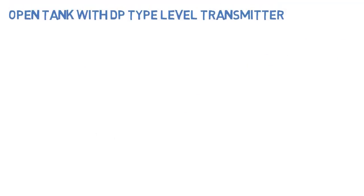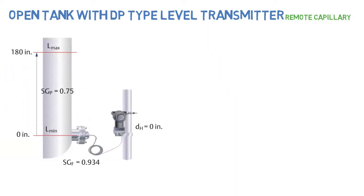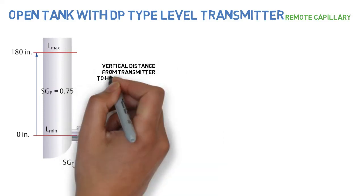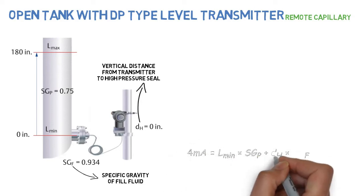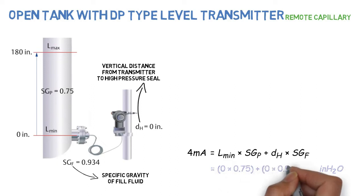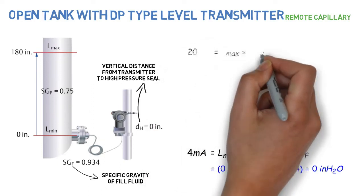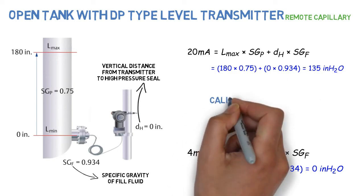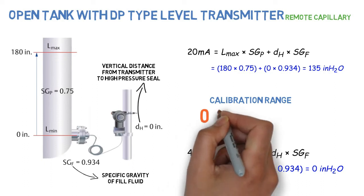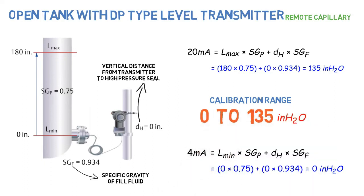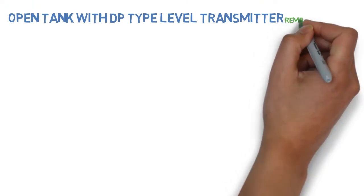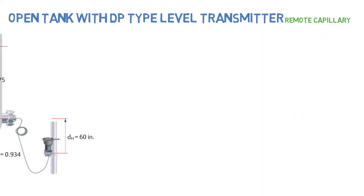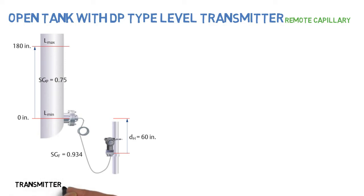Open tank with DP type level transmitter, remote capillary. Specific gravity of fill fluid. Vertical distance from transmitter to high pressure seal. Transmitter mounted below seal.